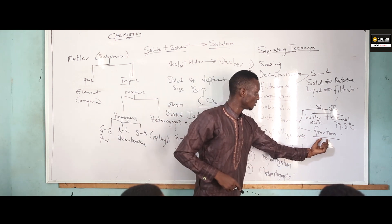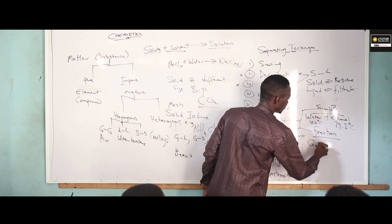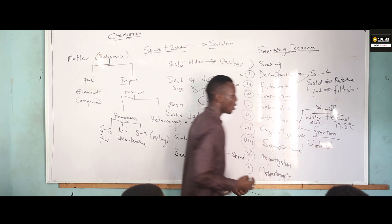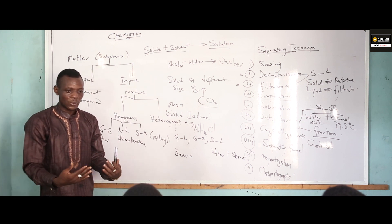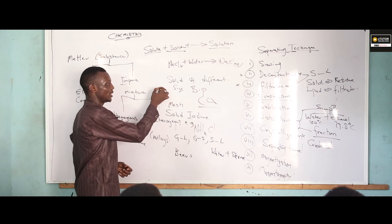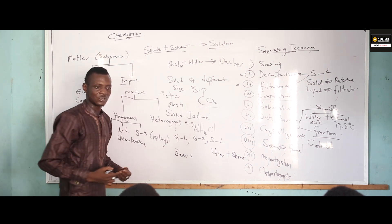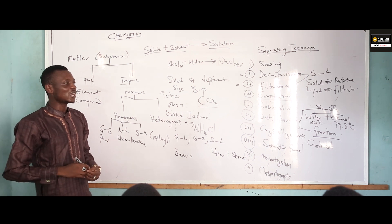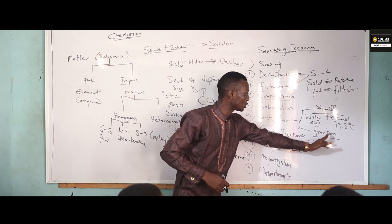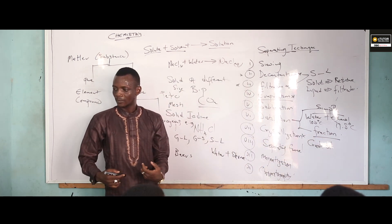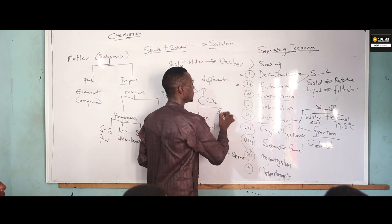For fractional distillation, for example, if you are having crude oil — crude oil has constituents which are liquids mixed together. In crude oil we have petrol, kerosene, and diesel. To recover all these constituents from that mixture, we use fractional distillation. The principal used in distillation is known as boiling point.